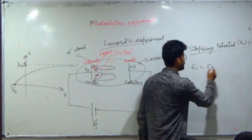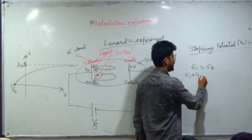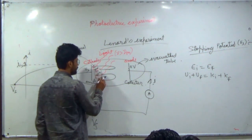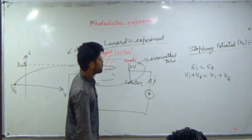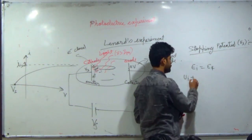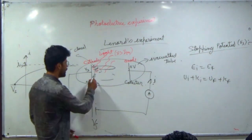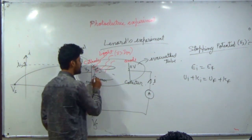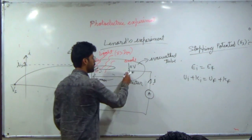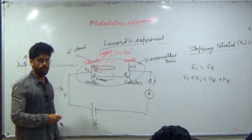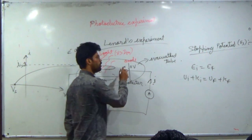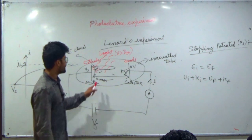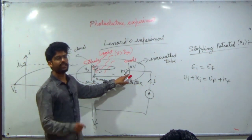Energy initial equals energy final, which means K initial plus U initial equals K final plus U final. The electron starts with maximum kinetic energy. Just before hitting the collector plate, what happens? Its kinetic energy becomes zero, because K equals half mv squared, and velocity goes to zero.